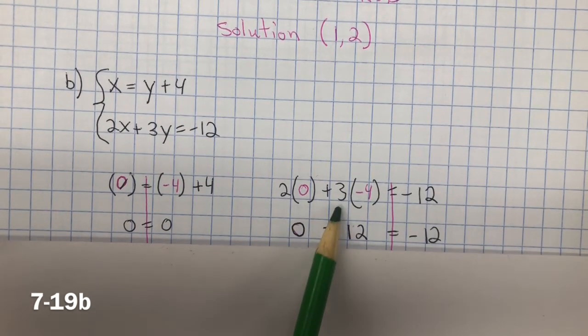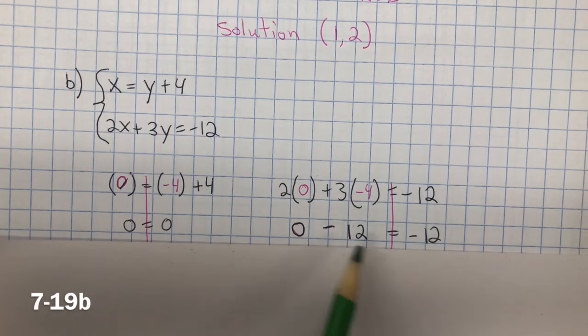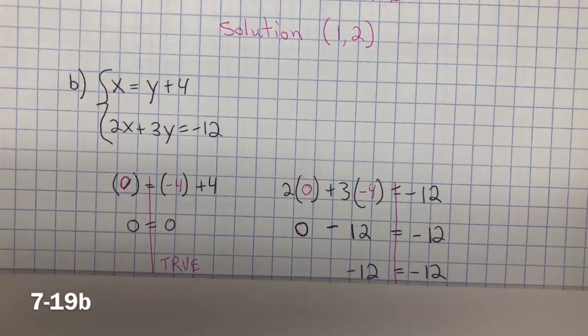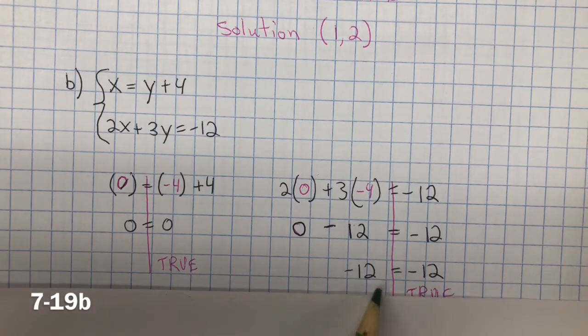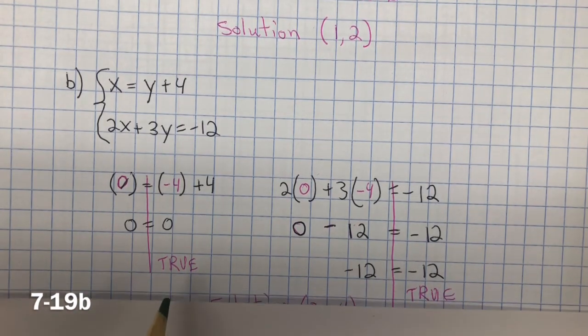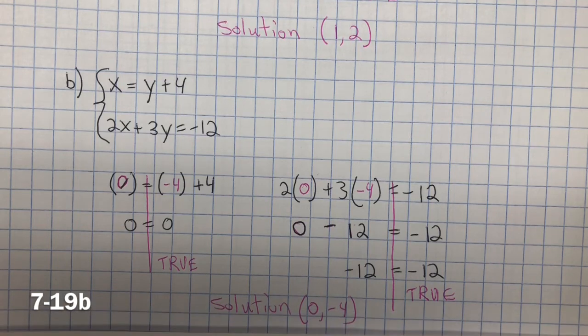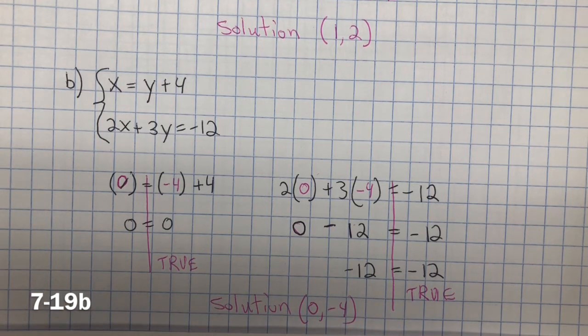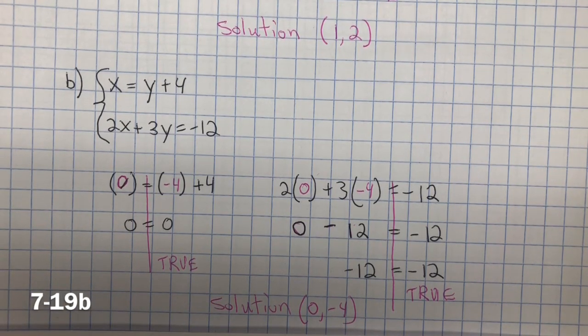Now I simplify each of these equations. 2 multiplied by 0, 0. 3 multiplied by negative 4 is negative 12. And I end up getting negative 12 equals negative 12. 0 equals 0. This is true. This is true. So, the solution to this system is 0 and negative 4.